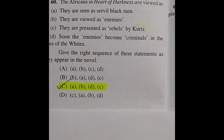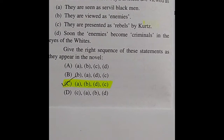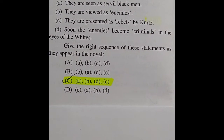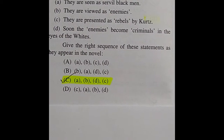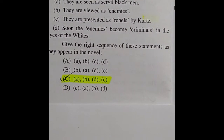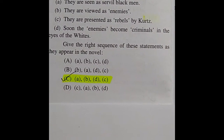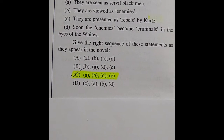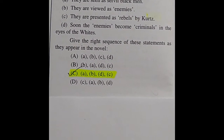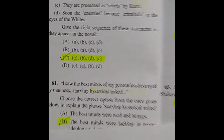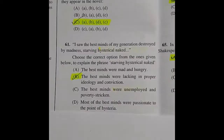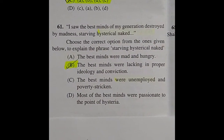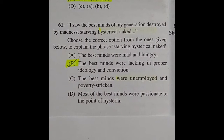Question 60: The Africans in Heart of Darkness are viewed as — the right answer is option C: they are seen as servile black men, then as enemies, then the enemies become criminals in the eyes of the whites, and finally they are represented as rebels.